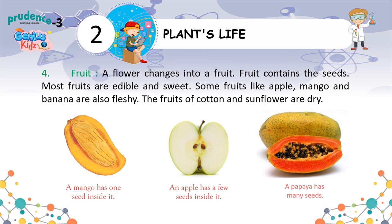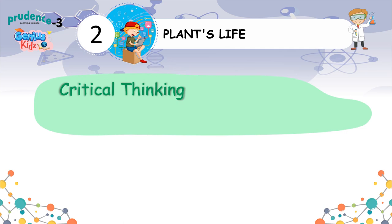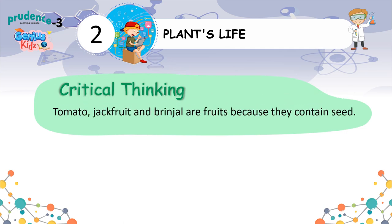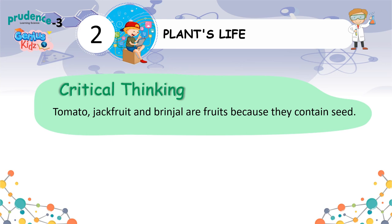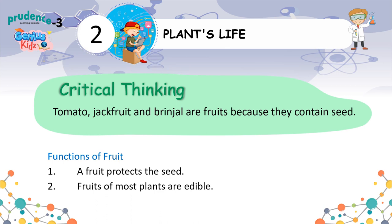Fruit. A flower changes into a fruit. Fruit contains the seeds. Most fruits are edible and sweet. Some fruits like apple, mango and banana are also fleshy. The fruits of cotton and sunflower are dry. Critical Thinking: Tomato, jackfruit and brinjal are fruits because they contain seeds. Functions of fruit: 1. A fruit protects the seed. 2. Fruits of most plants are edible.